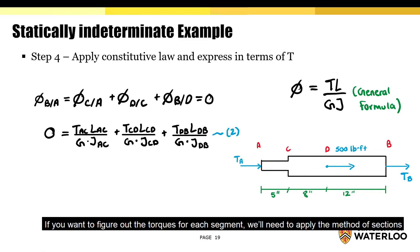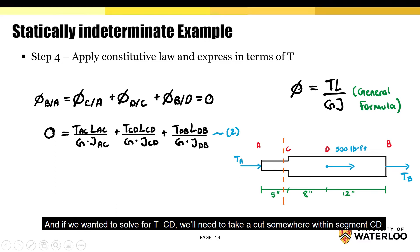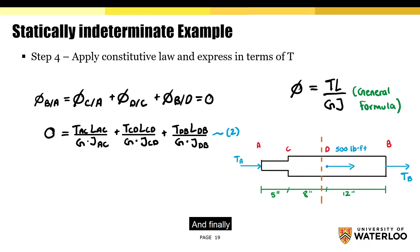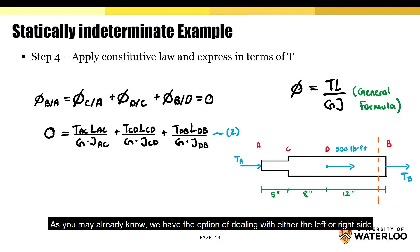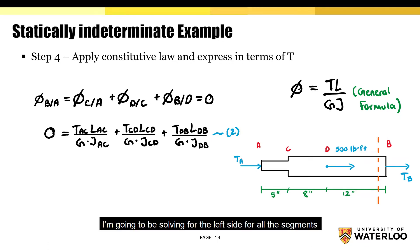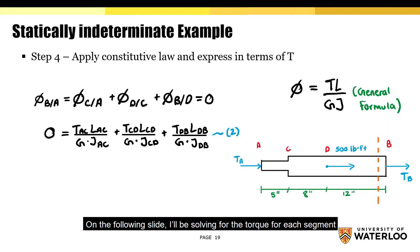To figure out the torques for each segment, we'll apply the method of sections. For instance, to solve for T-AC, we take a cut somewhere within segment AC. To solve for T-CD, we take a cut within segment CD. And to solve for T-DB, we take a cut within segment DB. We have the option of dealing with either the left or right side. I'm going to solve for the left side for all segments because I only want to deal with one unknown, which is T-A.